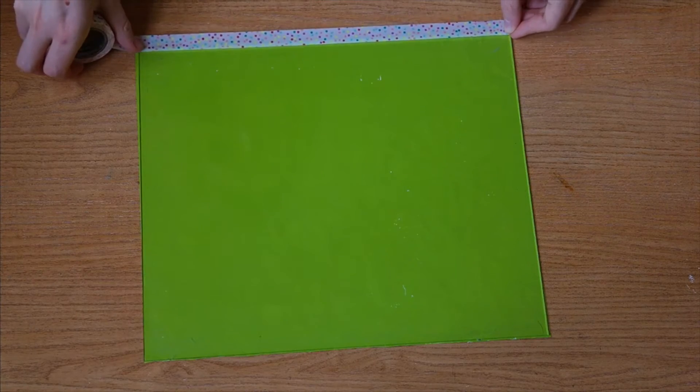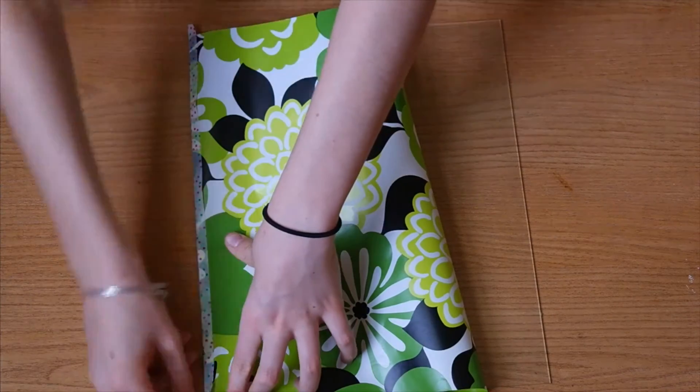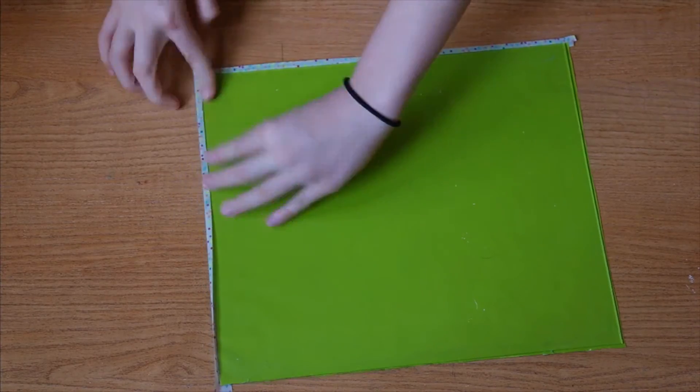Now I took some polka dot washi tape and taped the wrapping paper to the back of my glass. Make sure to tape it so the side of your paper that you want to see is facing the glass.